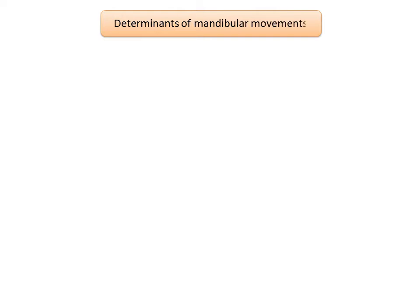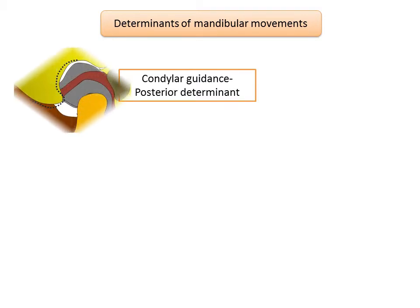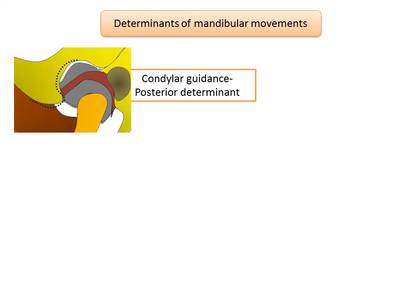The major factors that determine mandibular movements are condylar guidance, incisal guidance, and neuromuscular factors. Condylar guidance is also known as the posterior determinant. It can be defined as mandibular guidance generated by the condyle and articular disc traversing the contour of the glenoid fossa — essentially the path of movement taken by the condyle in the glenoid fossa. It is measured using a protrusive interocclusal record.